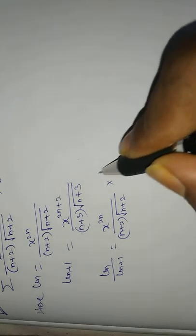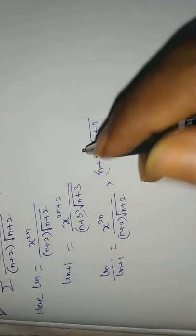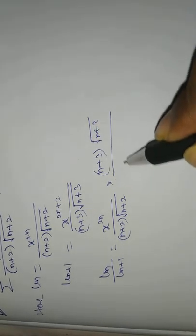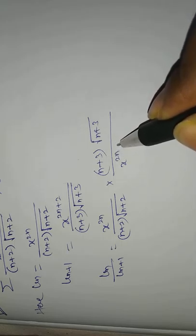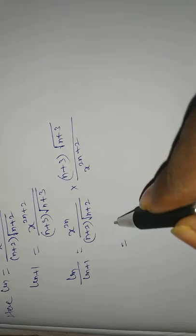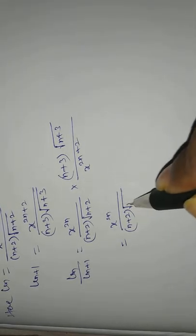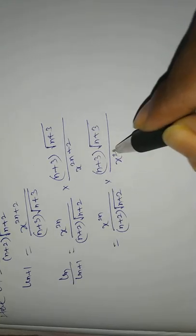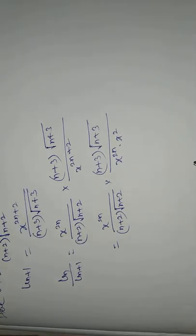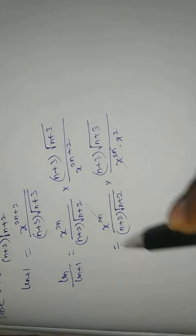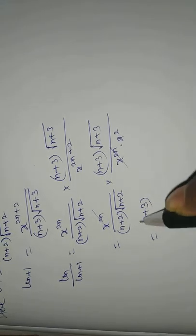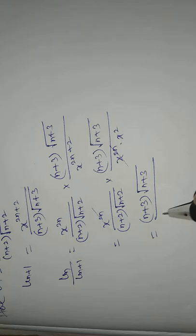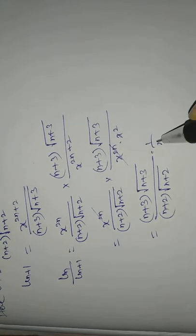Now compute U_n divided by U_{n+1}: that equals x^(2n) over (n+2)·√(n+2), multiplied by (n+3)·√(n+3) over x^(2n+2). Simplifying, x^(2n) cancels, giving (n+3)·√(n+3) over (n+2)·√(n+2), all multiplied by 1/x².